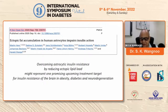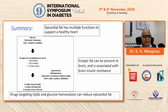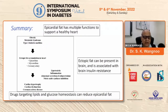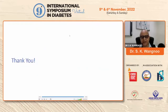Time is not very far when we will have many medicines for neurodegenerative disorders. To summarize: epicardial fat has multiple functions to support a healthy heart. Obesity, metabolic syndrome, and type 2 diabetes lead to ectopic fat accumulation in the heart — in the epicardium, myocardium, and coronary arteries — and because of the underlying lipotoxic inflammation, abnormal secretion of adipokines, and nitric oxide synthesis inhibition, it leads to cardiac hypertrophy, cardiac dysfunction, and coronary artery disease. Ectopic fat can be present in the brain and is associated with brain insulin resistance. Drugs targeting lipid homeostasis — including metformin, GLP-1 receptor agonists, SGLT2 inhibitors, and statins — can reduce epicardial fat.